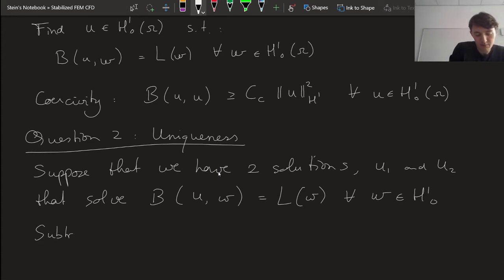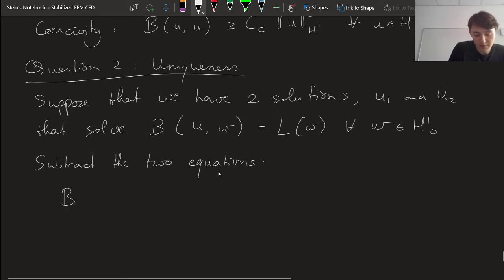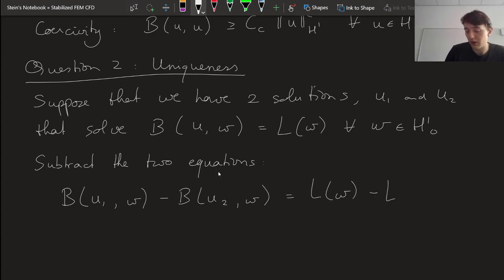So, subtract the two equations, and then we obtain that B(u₁,w) minus B(u₂,w) is going to be equal to L(w) minus L(w), for all w, and so this is going to be equal to 0.